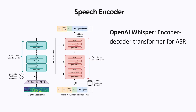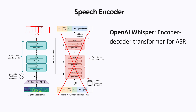A popular choice for the speech encoder is the OpenAI Whisper model. This is an encoder-decoder transformer-based model that was trained for automated speech recognition. In the context of speech LLMs, we actually don't care about the decoder part of this model — we're more interested in the encoder, and we just use it to generate a sequence of embeddings. It turns out these embeddings, trained for speech recognition, are a reasonably good representation of the speech signal.